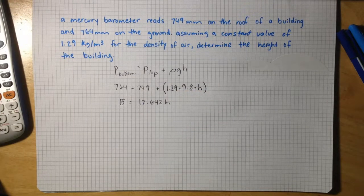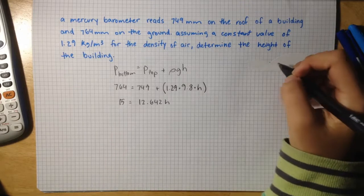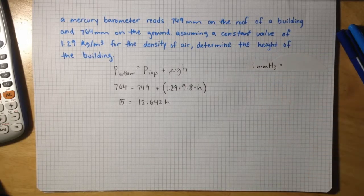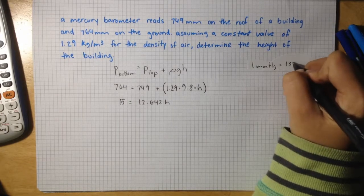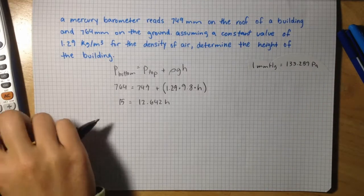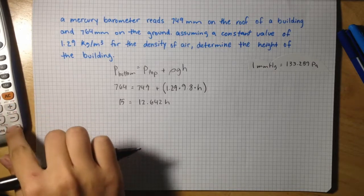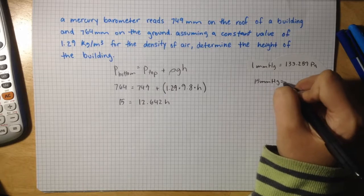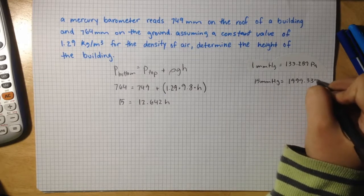At this point I'm going to convert the pressure from millimeters of mercury to pascals. 1 millimeter of mercury equals 133.289 pascals. So I'm going to take 15 and multiply it by 133.289 to get 1,999.335 pascals.